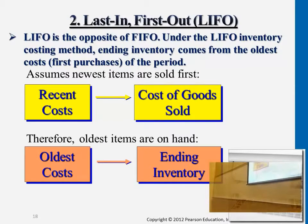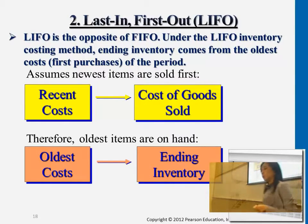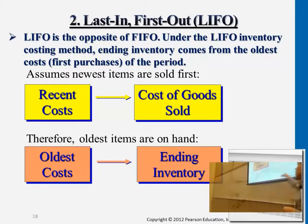This is exactly the opposite of FIFO. Last in, first out — the latest transaction purchase cost is being assigned to cost of goods sold, while the oldest cost stays in the warehouse and is assigned to ending inventory.